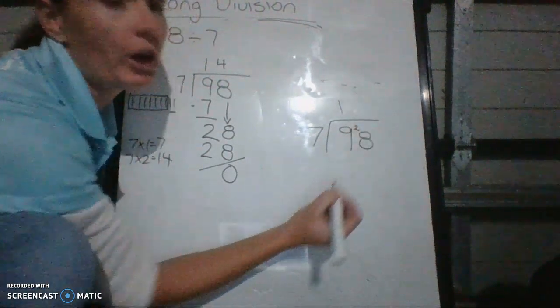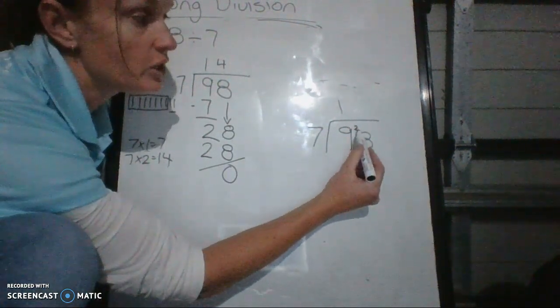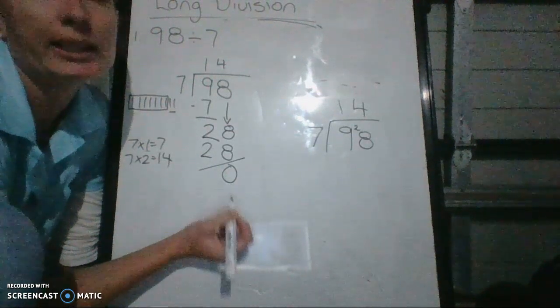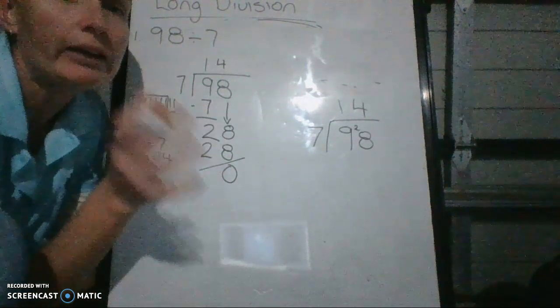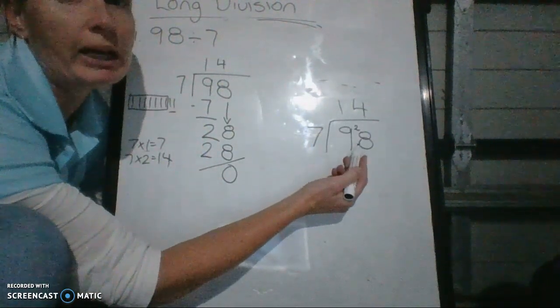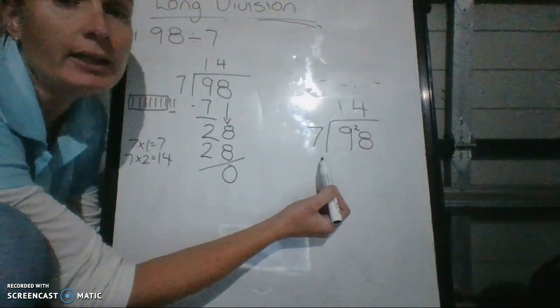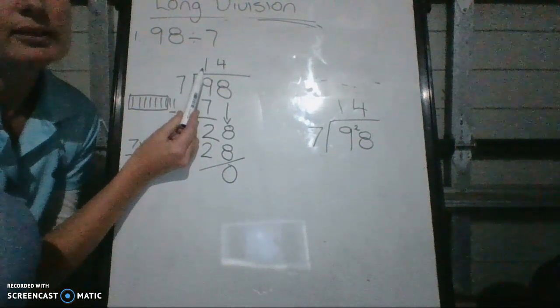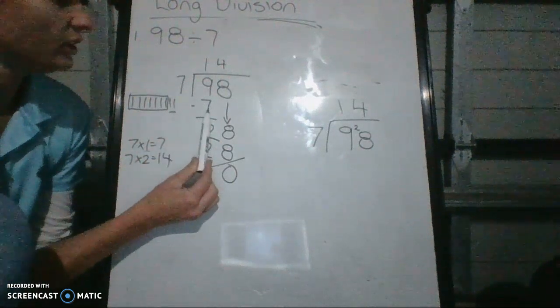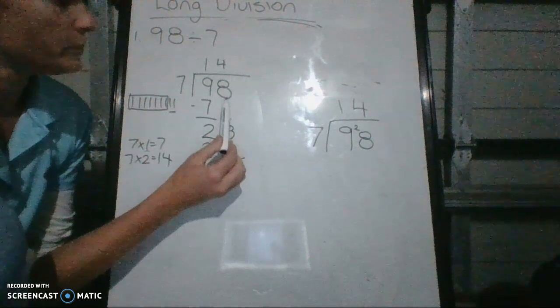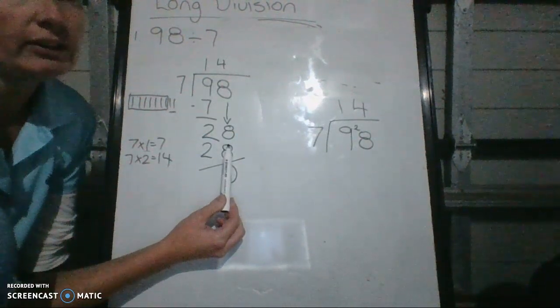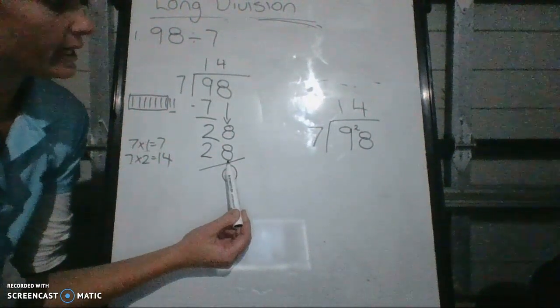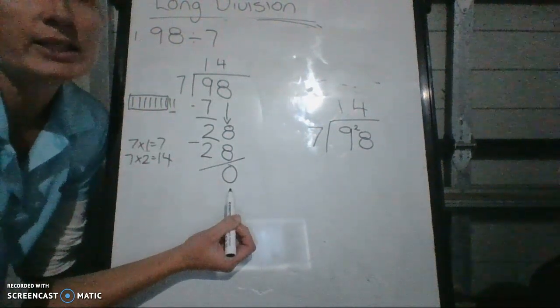So then I kind of carry the 2 over here. Then it becomes 7 into 28, which is 4. All these sums today have no remainders. So you'll have none left over. They're all evenly grouped. So 98, you can split it up evenly into 7 groups. So what I did was 7 into 9 only goes once. Then I times it. So 1 times 7 is 7. Then I subtracted it to get 2 left over. Dropped down the 8, so I have 28 left over. I know that 7 times 4 is 28. So I put the 4 up there, put the 28 down here, took it away, and I'm left with 0.